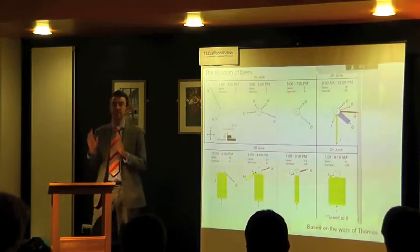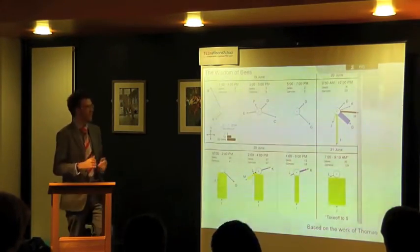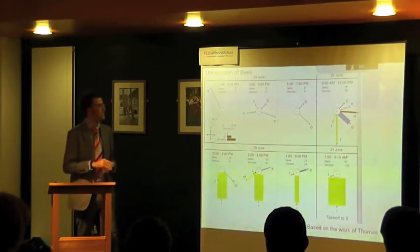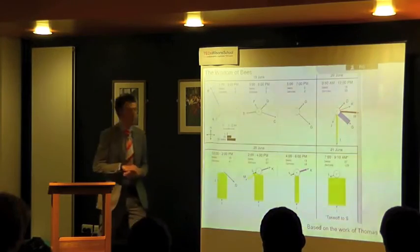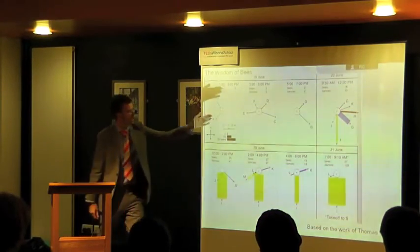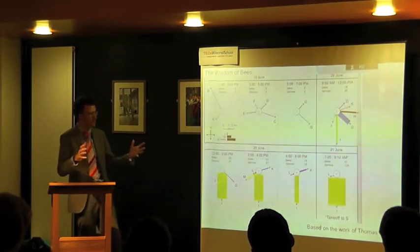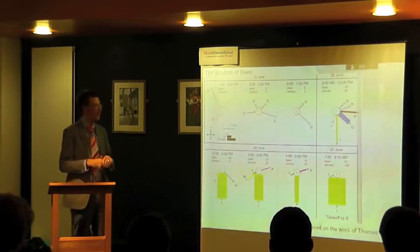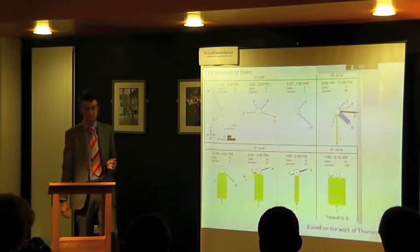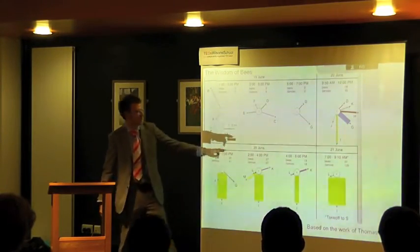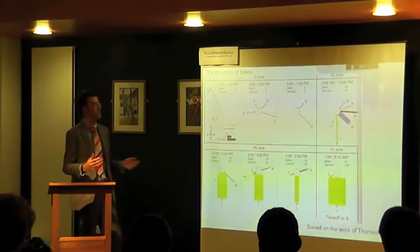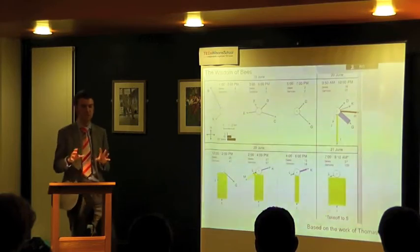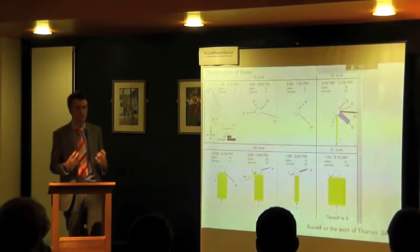Every line represents a bee flying to and from a prospective home, coming back and dancing. In the first afternoon and evening, there are a large number of prospective homes, with site E taking some dominance. Then the next morning, a whole new set of prospective homes are found. The thicker the bar, the more bees are flying to that site and dancing on return. Over the course of three days, one site — site I — becomes dominant. After the final dance, all the other bees had reached a conclusion that I was the best site, and only when all bees agreed did the swarm take off.